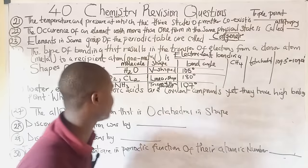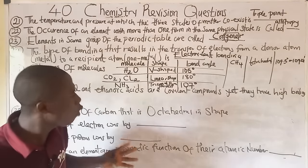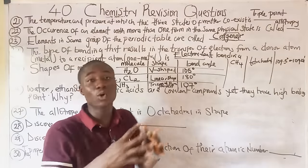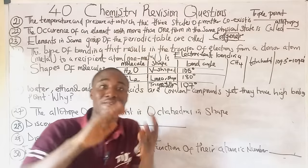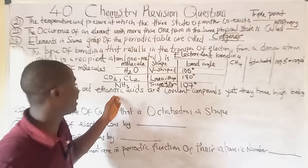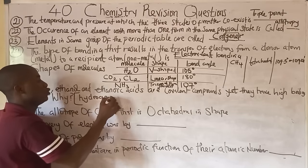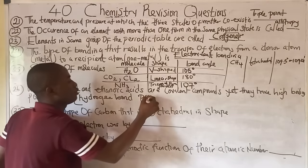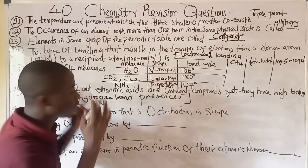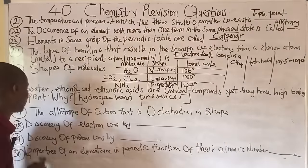Question twenty-six: water, ethanol, and ethanoic acid are covalent compounds, yet they have high boiling points. This is due to the presence of hydrogen bonds in their molecules. Because of hydrogen bonding present in their molecules, these covalent compounds have unusually high boiling points.